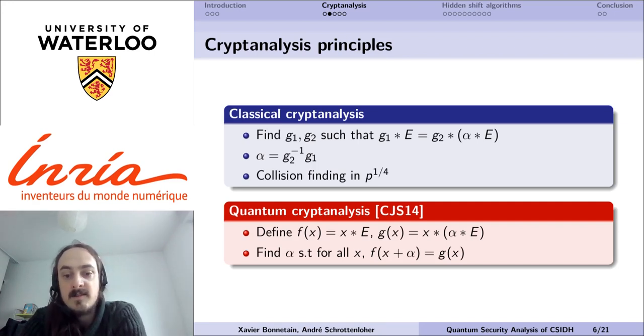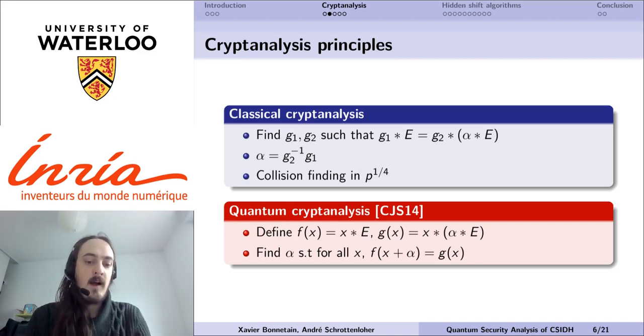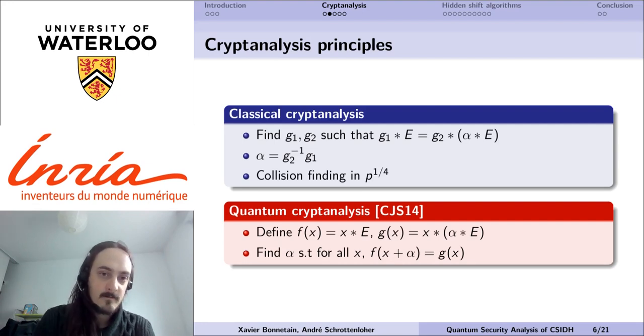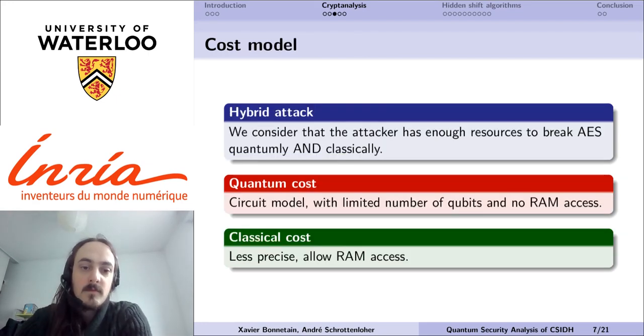For the quantum cryptanalysis, the idea is fairly similar, but seen in a slightly different way. We define two functions that correspond to the evaluation of the group action from an element of the class group, that we note f and g on each of the two curves. We want to find the secret value alpha by leveraging the very specific properties that these two functions are equal up to a shift of their input of alpha.